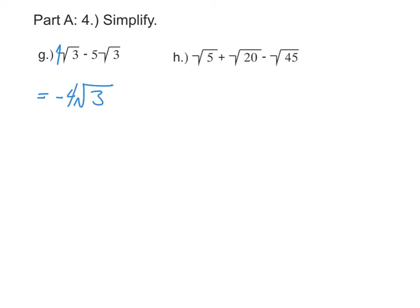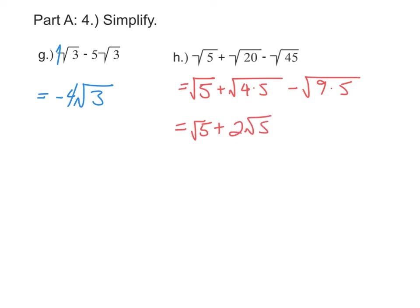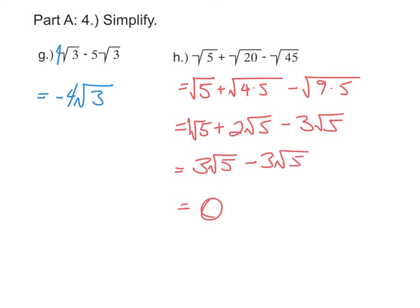But in part H, it doesn't look like anything is alike. So our first step is to simplify each root on its own. The square root of five can't simplify, but the square root of twenty is the square root of four times five, and the square root of forty-five is the square root of nine times five. Each of those last two can be simplified: the square root of four is two and the square root of nine is three, while the square root of five stays. Now combining like terms: one plus two gives three square roots of five, and we subtract three square roots of five, so the result is zero.